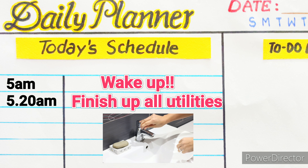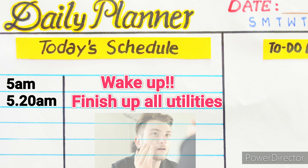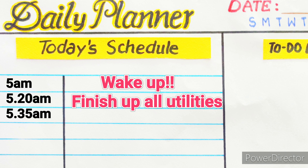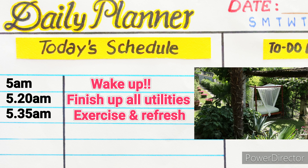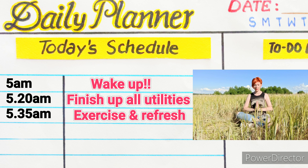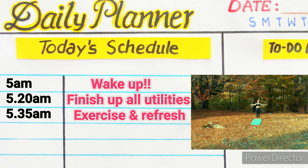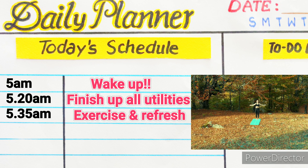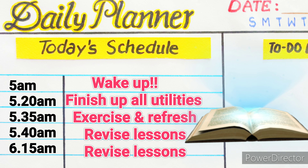5:00 AM to 5:20 AM: finish up all utilities of freshing up yourself. 5:20 AM to 5:35 AM: go to the terrace or balcony, observe the nature, and do some deep breathing exercises. You can also do some kind of exercises to keep yourself fresh and active the whole day long.